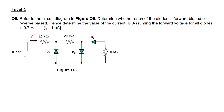The current IT comes up from the positive terminal of the 30.7 volts voltage source, passes through the 10k resistor, then splits into two paths. The current that goes down towards diode D1 is trying to enter from the cathode side of D1, so we can analyze that diode D1 will be reverse biased.